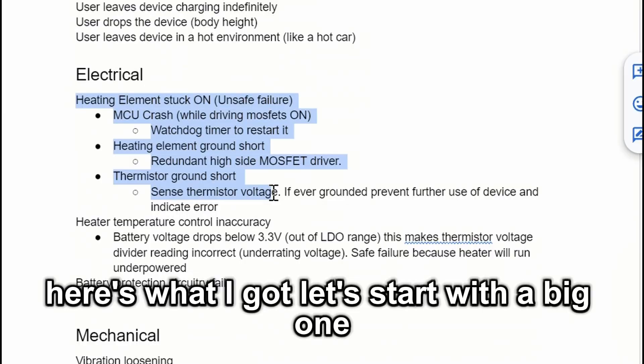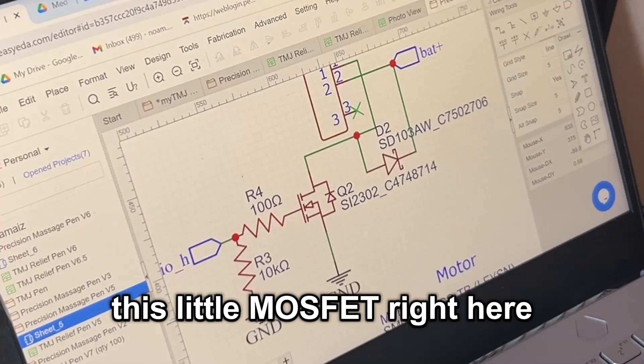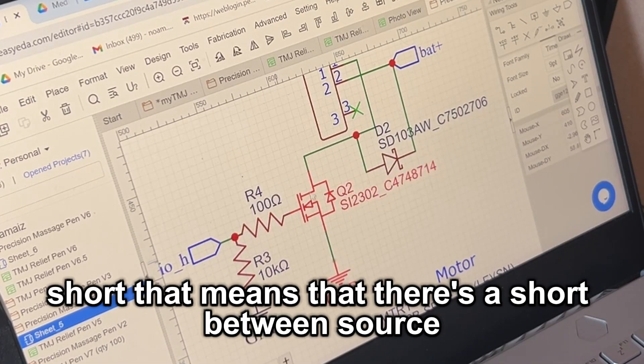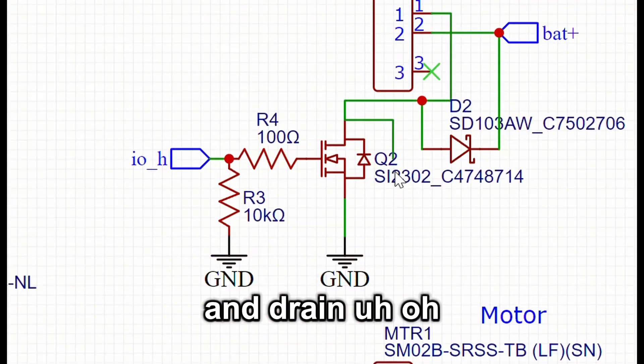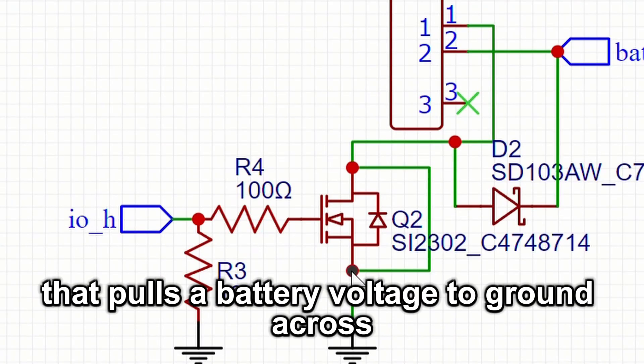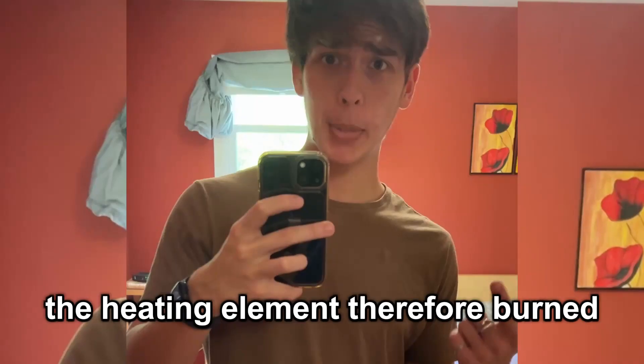Let's start with a big one. This little MOSFET right here. What happens when it fails short? That means that there's a short between source and drain. That pulls the battery voltage to ground across the heating element. Therefore, burned.